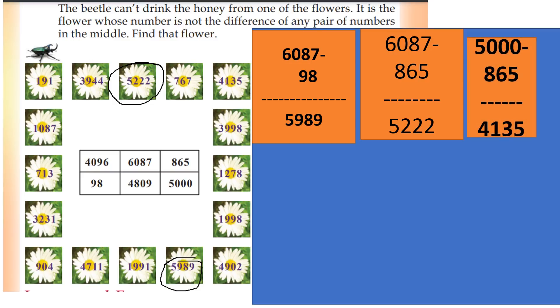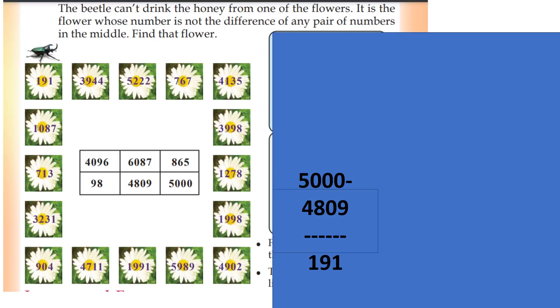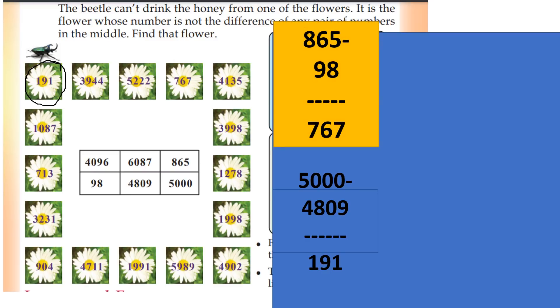5000 minus 865, this answer is 4135. Then 6087 minus 4809 is 1278. And 6087 minus 5000 is 1087. Also 5000 minus 4809 is 191.